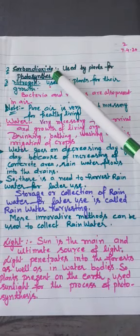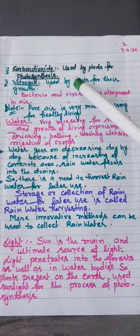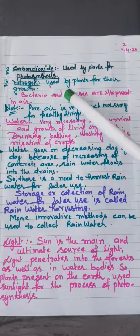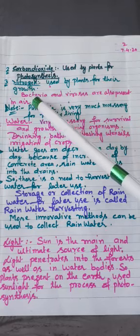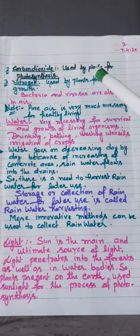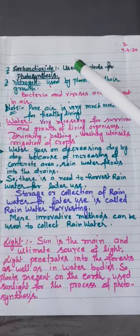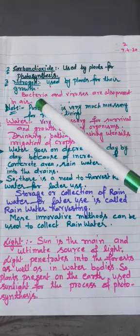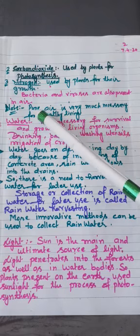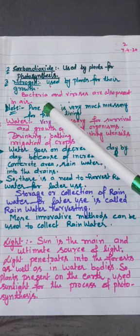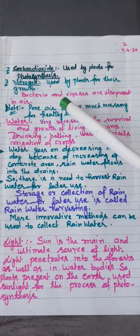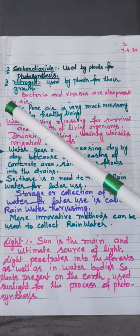And next, nitrogen, which is used by plants for their growth. As you know, bacteria and viruses are also present in the air. So we discussed what is present in air and how these components of air are used by living components. Here I put a note for you: pure air is very much necessary for healthy living. This is our duty to keep our surrounding clean so that we can inhale the clean air.